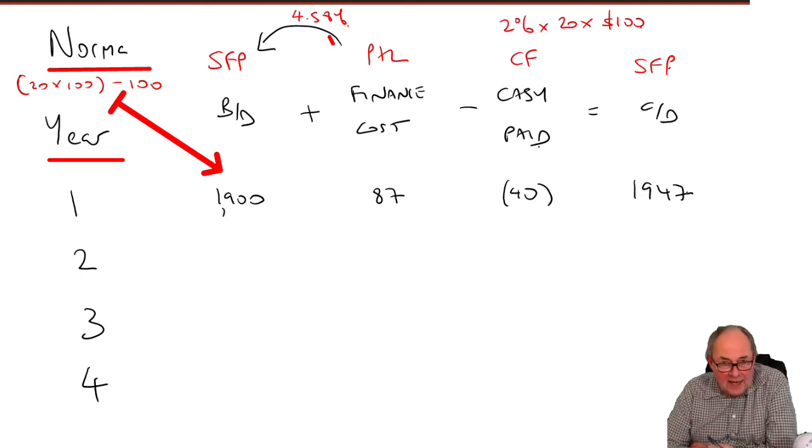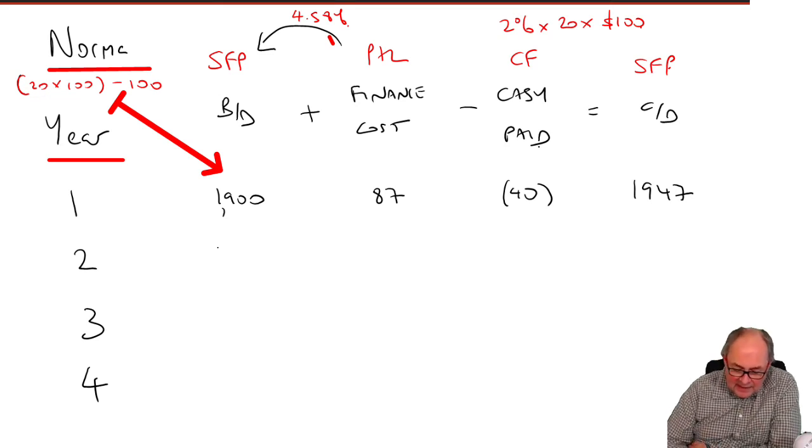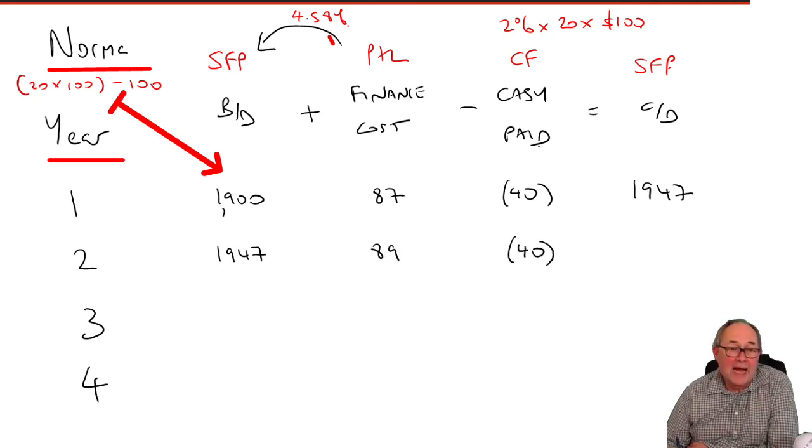If you were struggling with that, just pause the recording. Have a go at the other three years, and then I'll go through them. Second year, 1947 times 4.58%, 89. Less 40. Carrying value of the liability, 1996.